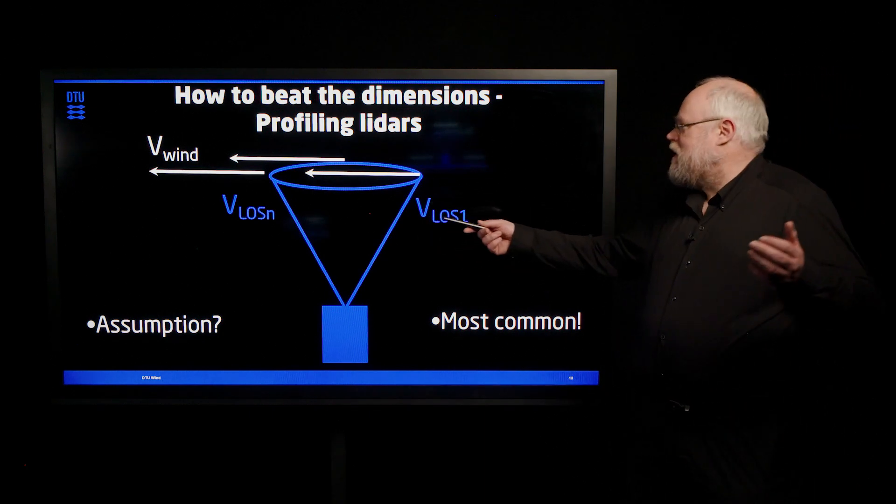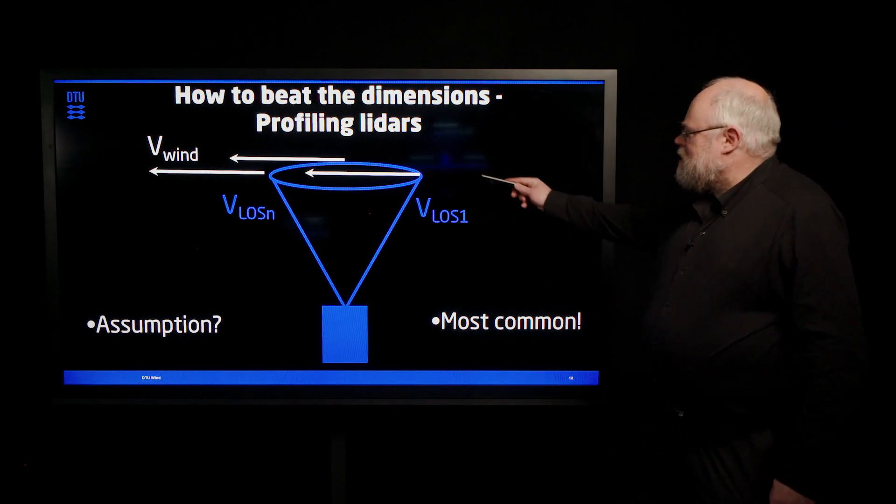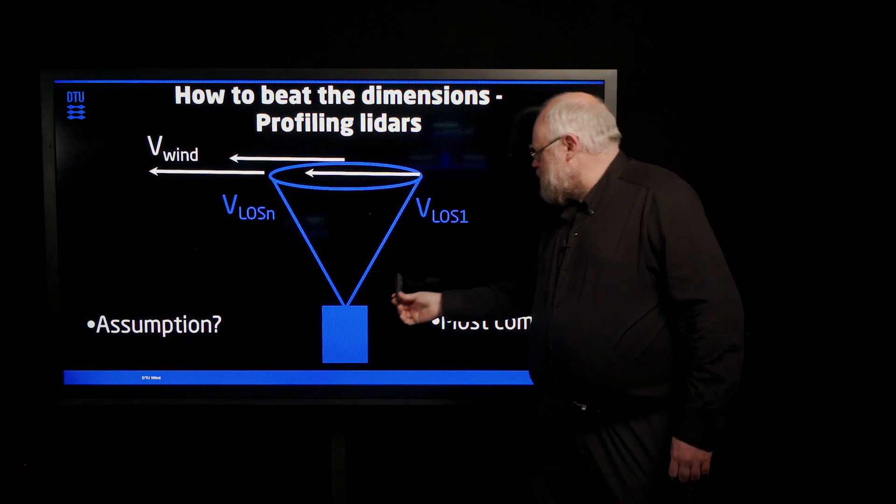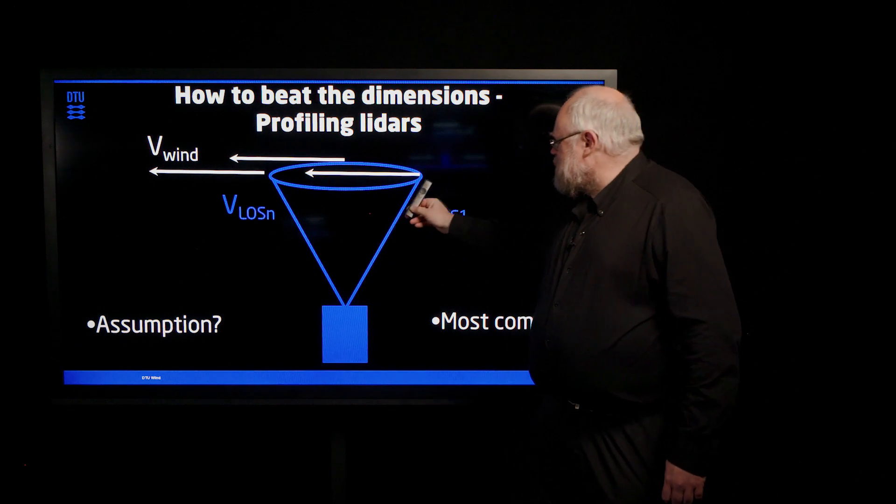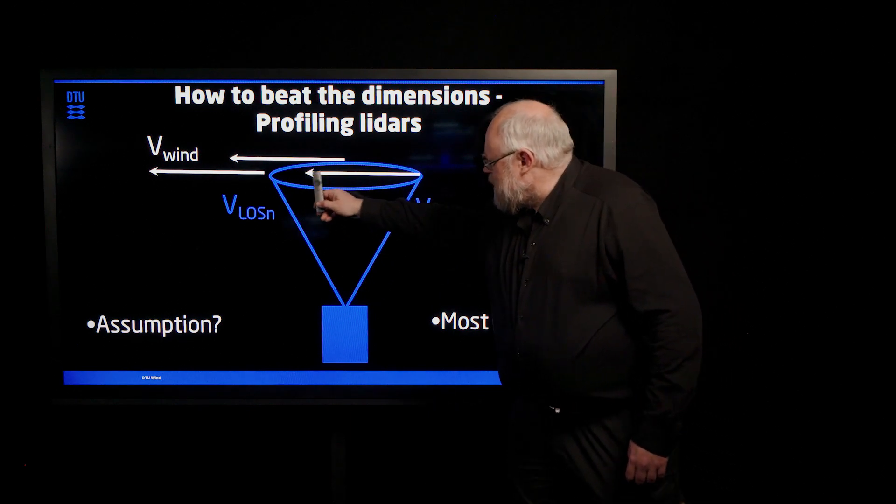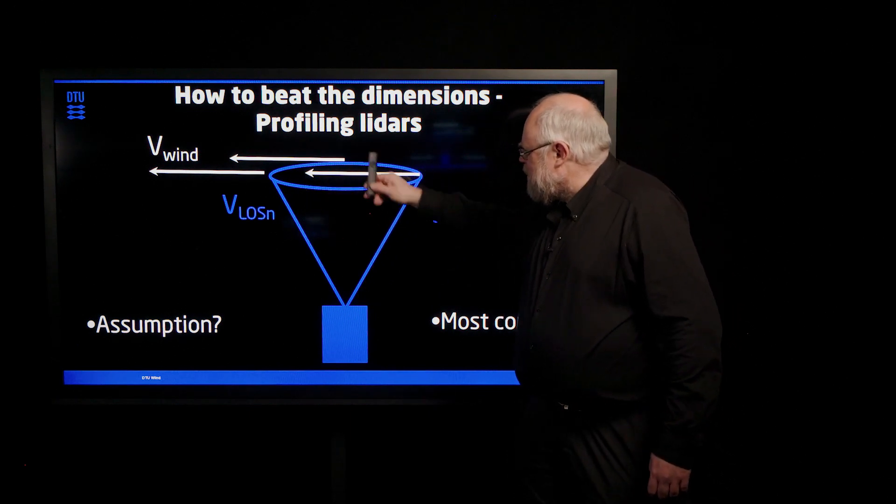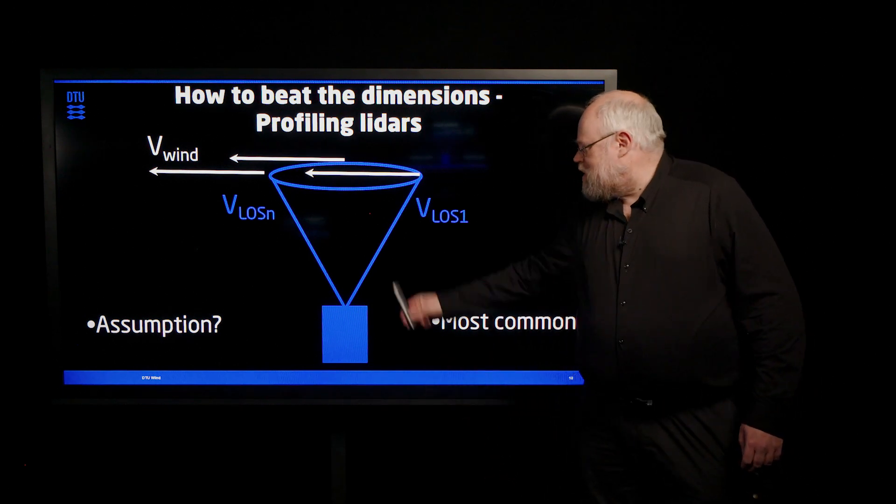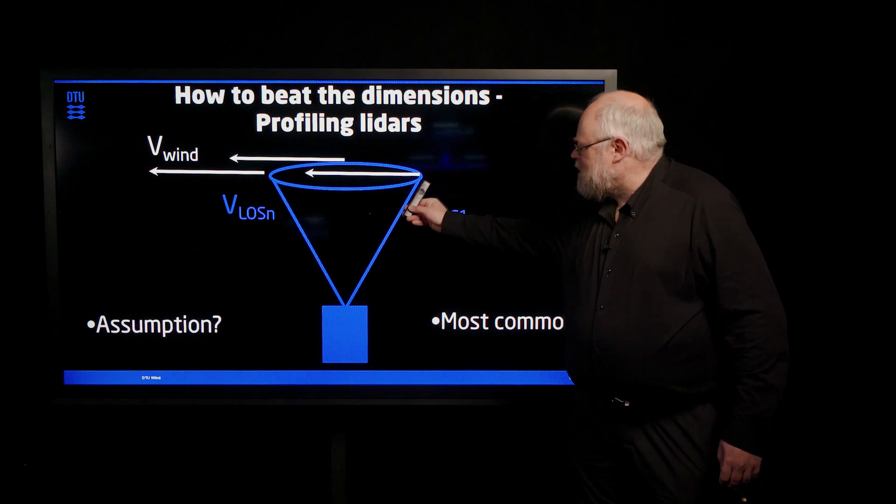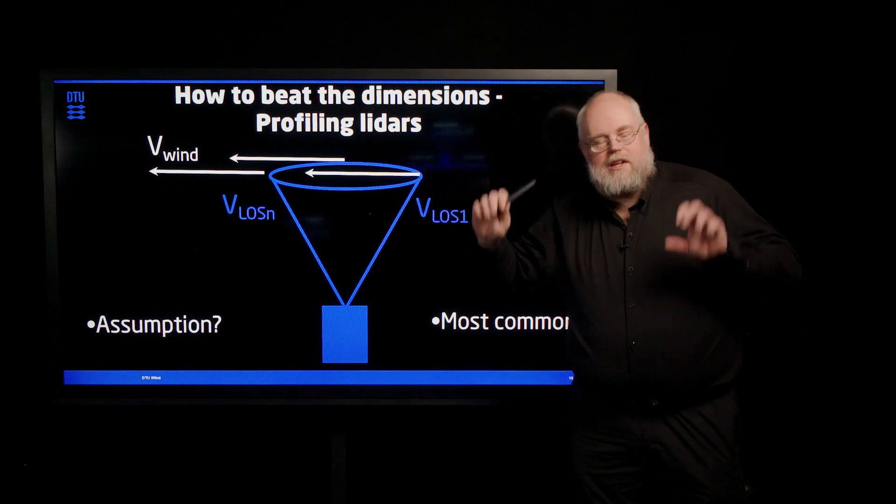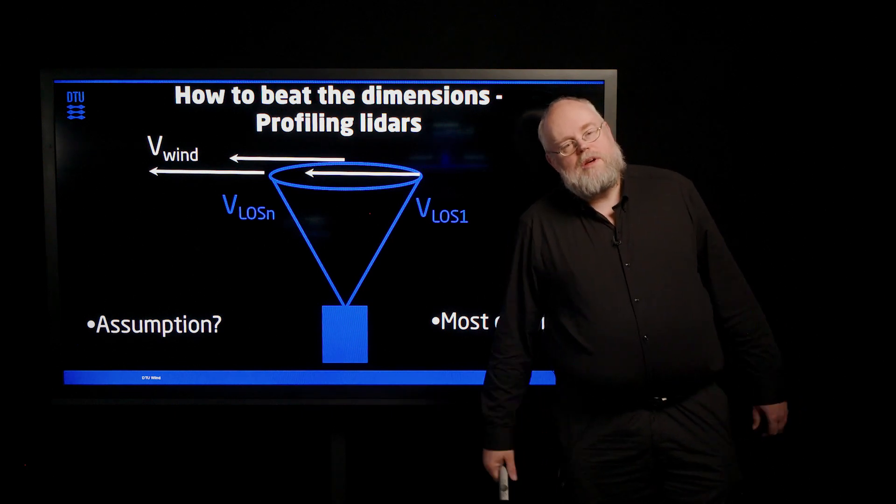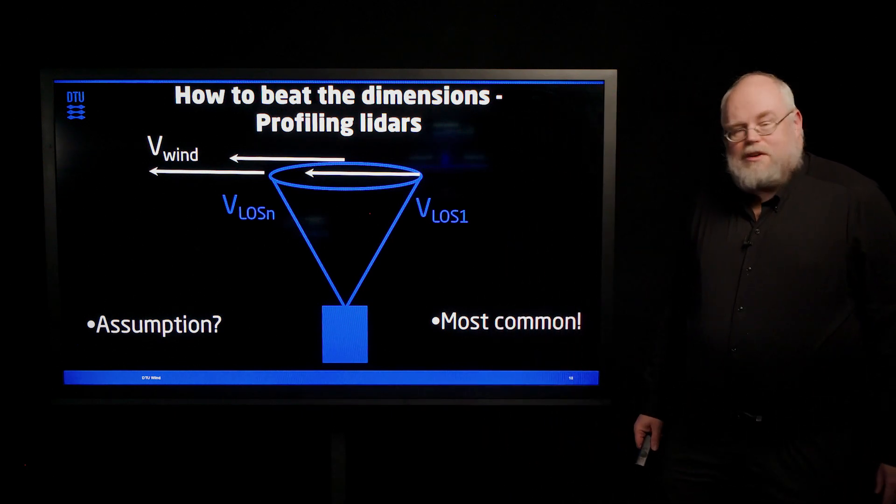For instance, in a very flat terrain, you could imagine that the wind is more or less the same at lots of different points. So, if you have one lidar instrument that swings the beam around, maybe around a circle or in some different directions, then it will effectively actually have different line of sight hitting the same wind. If you assume it is the same wind, then you can decompose that into the different wind components.